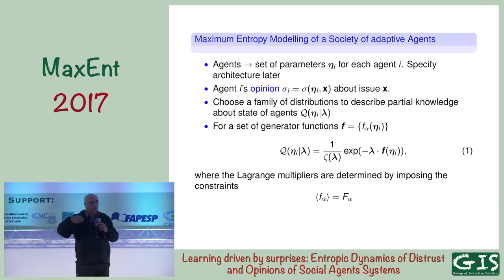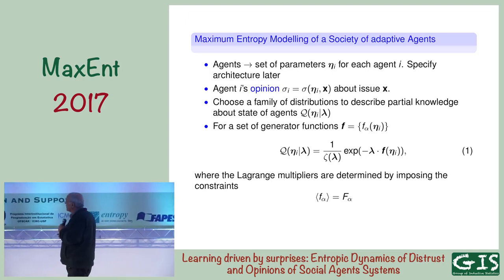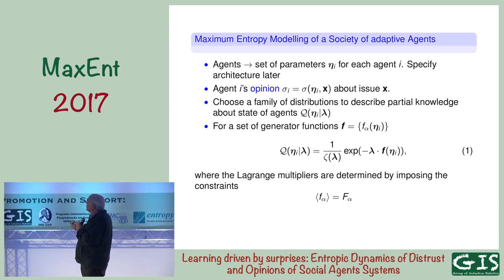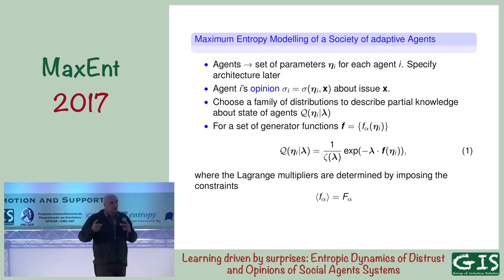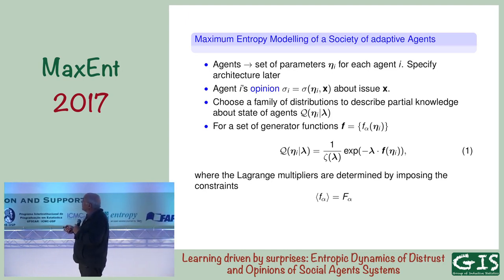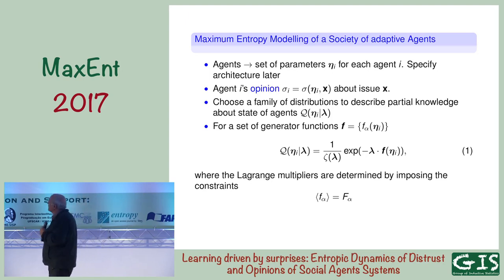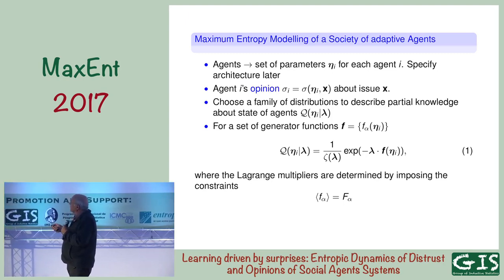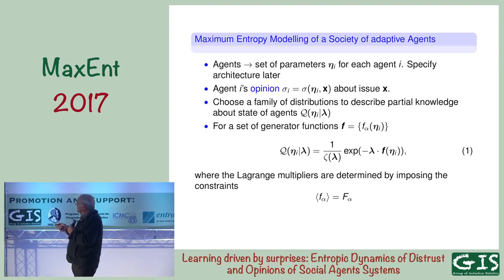I'm going to take this as minus one or plus one values, but it could be something else. I don't have information about the parameters — I have incomplete information about those parameters — so I'm going to put a distribution of probability. I'm going to choose a family of distributions of probability which have some parameters. For each member of the family, I have a set of lambdas, which can be a vector or array of values. All I have to know to identify the lambdas is the value of the expected values of a set of functions.